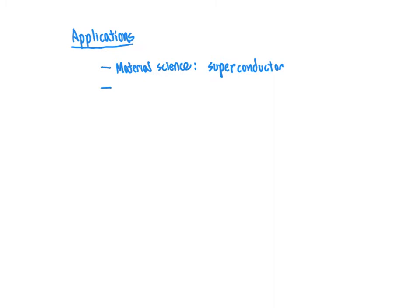Somewhat overlapping with material science is a lot of applications in inorganic chemistry. Chemists often synthesize a variety of inorganic compounds, and one common way to identify those compounds is through crystallizing the substance and determining the crystal structure through x-ray diffraction. When we get into applications related to chemical biology, we're typically interested in molecules of biological relevance — specifically the determination of the structures of biomacromolecules.